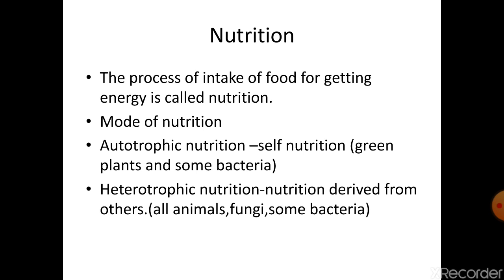There are two types of nutrition: autotrophic nutrition and heterotrophic nutrition. Autotrophic nutrition means the organism is capable of making its own food, found in green plants because they perform photosynthesis, and in some bacteria. Heterotrophic nutrition is found in living organisms which derive their nutrition from other organisms — they cannot make their own food. Autotrophs are producers; heterotrophs are consumers. Examples of heterotrophs are fungi and some bacteria.